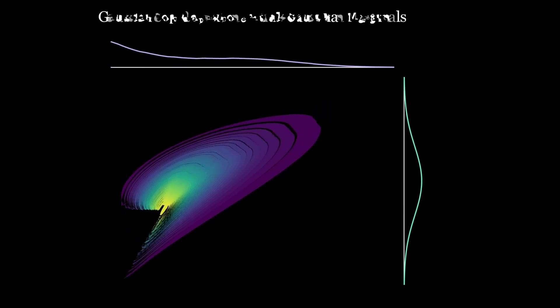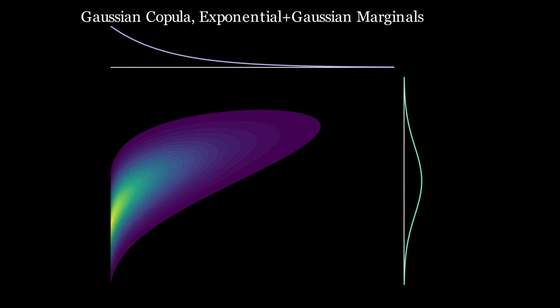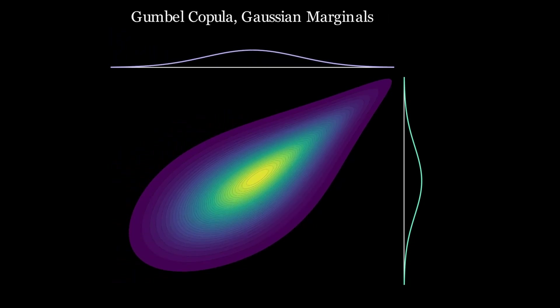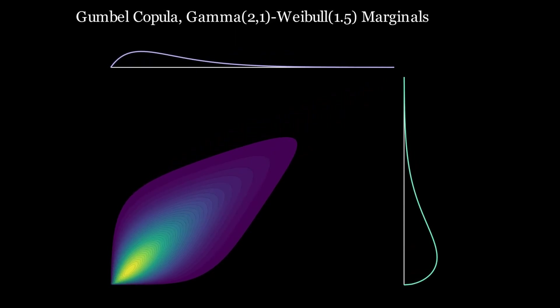We can take a Gaussian copula with Gaussian marginals, which is just the standard bivariate normal. Or we can keep the same copula, but change one marginal to an exponential. And get this.